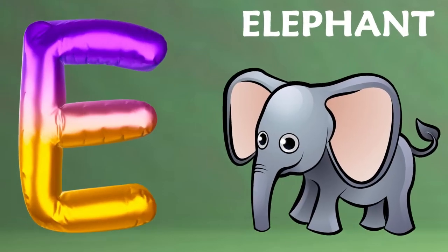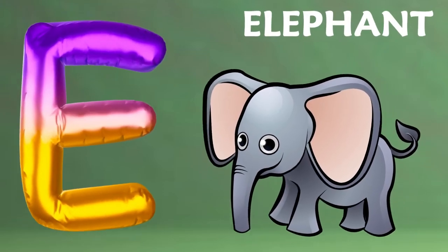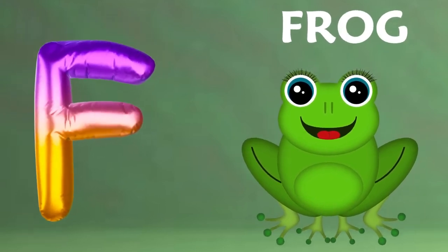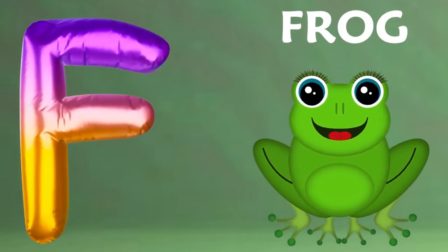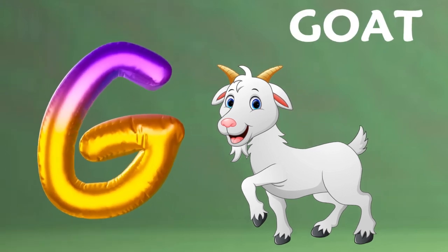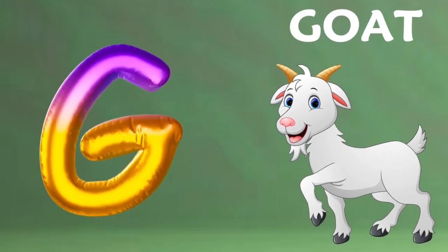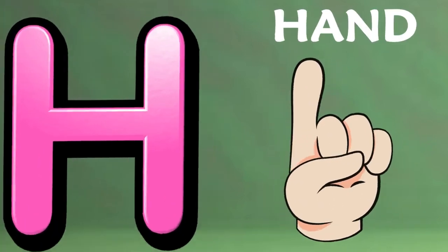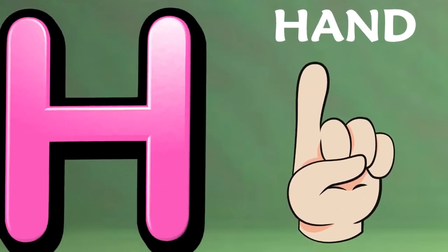E is for elephant, e-e-elephant. F is for frog, f-f-frog. G is for goat, g-g-goat. H is for hand, h-h-hand.